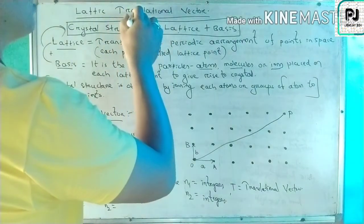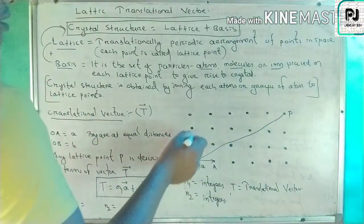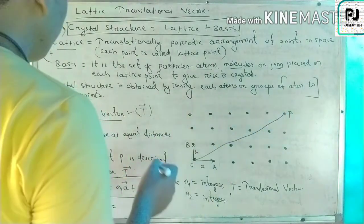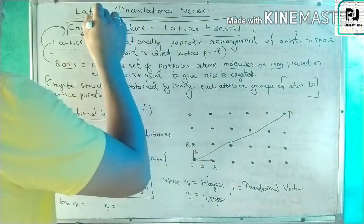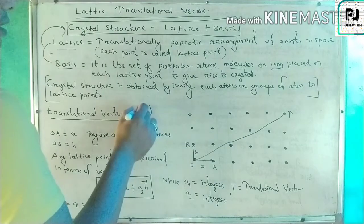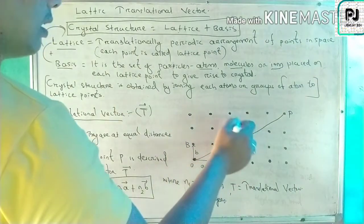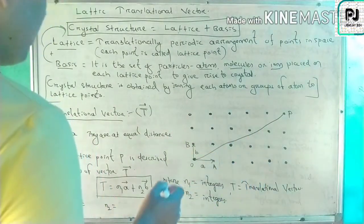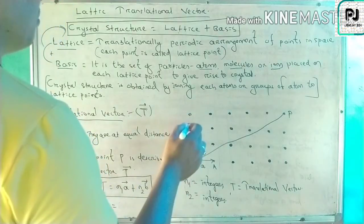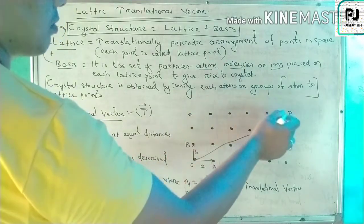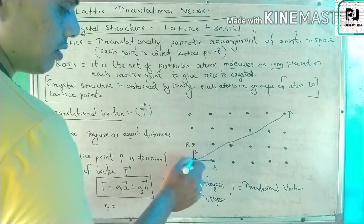Our aim is to find out what is the lattice translational vector. This is the regular arrangement of points, and the basis consists of atoms, molecules and ions placed on those points. The translational vector is represented by the letter T. Here I have taken the lattice points — on this side there are four points and on the other side there are six points.